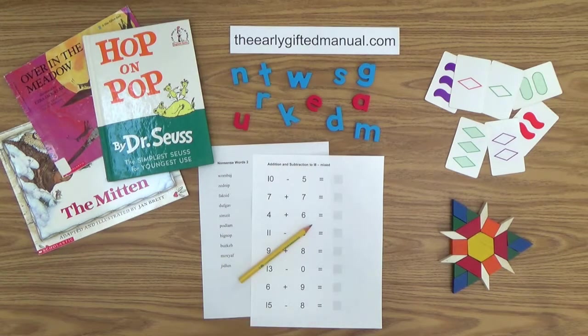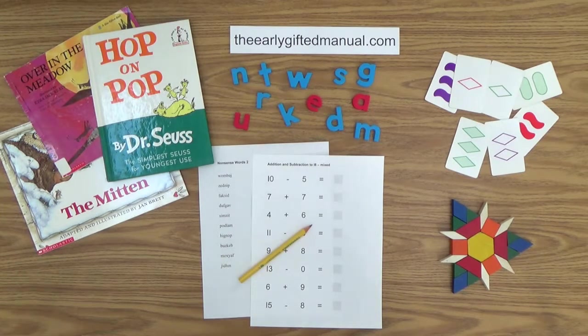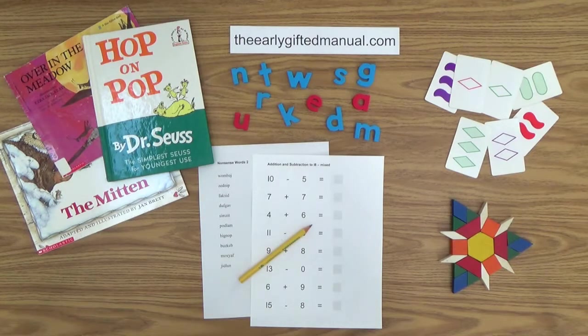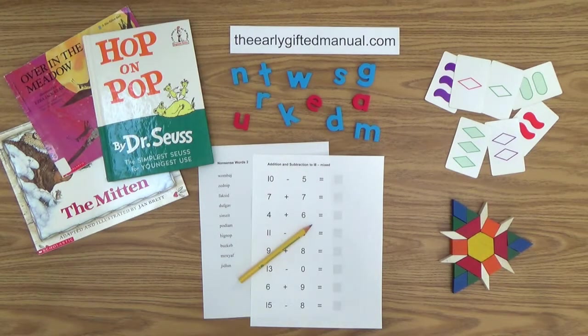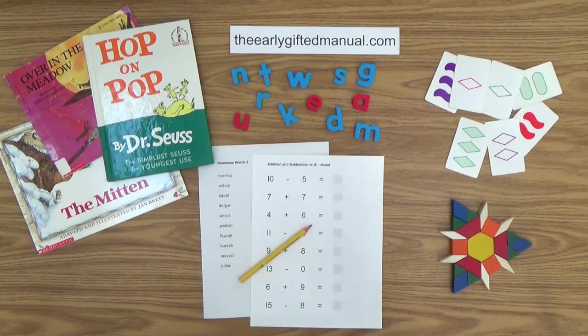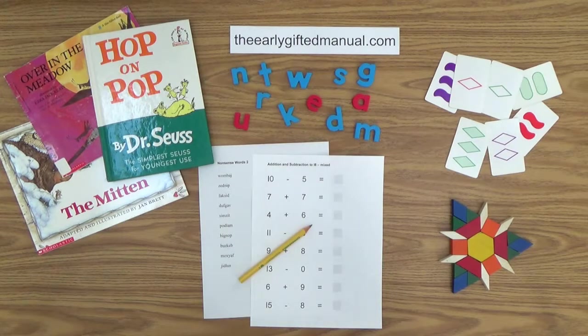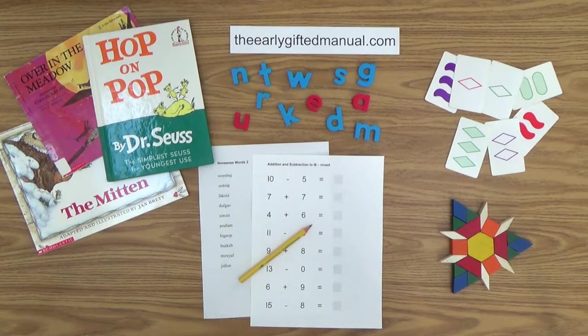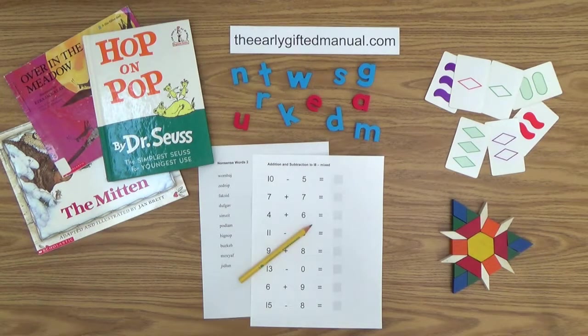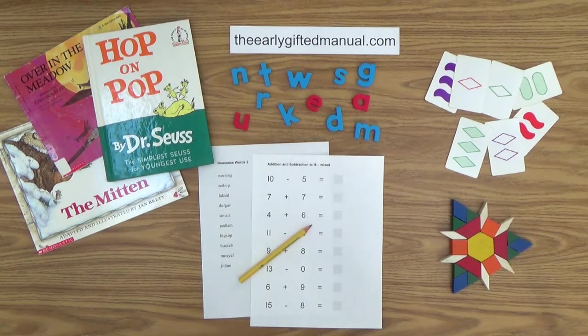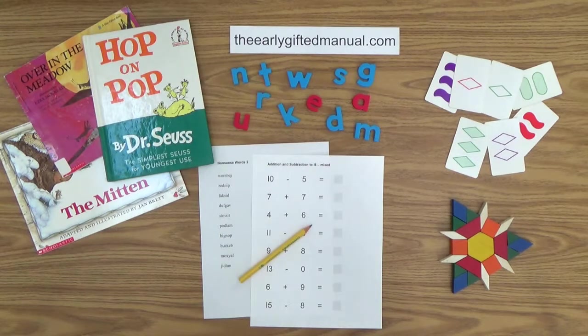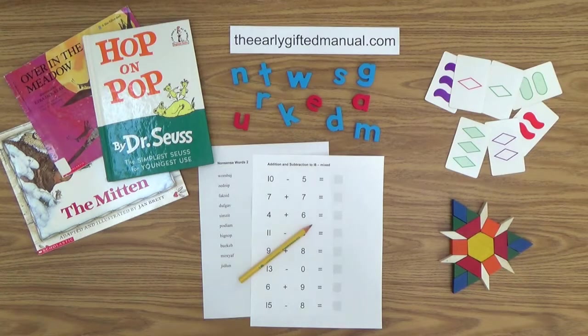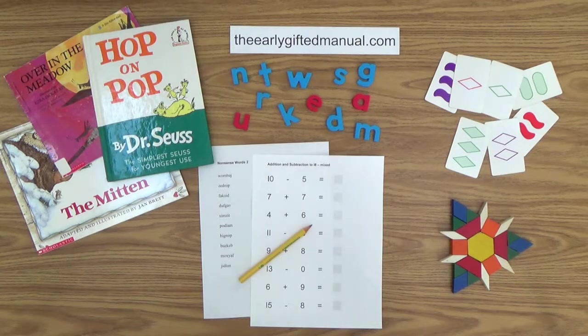As the video lessons are designed to work in conjunction with the program on my website, I ask you to, at some point, click on the URL link in the description box below. This action will take you to theearlygiftedmanual.com. By doing that, you will be able to put this lesson and all of the video lessons here on my channel in the proper context of the total program that I am presenting to you and your child.